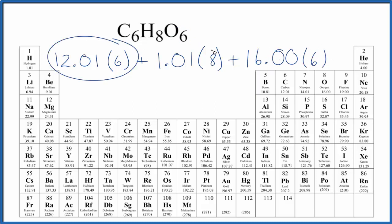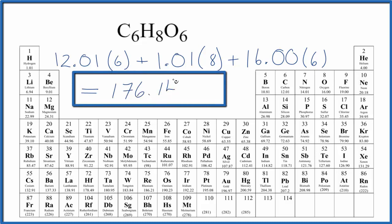So we're going to multiply first and then add these three numbers together. That'll give us a molar mass of 176.14. And the units are grams per mole.